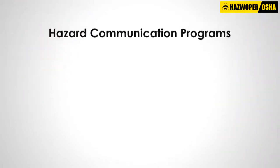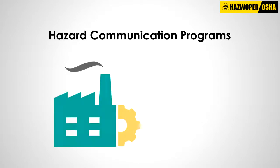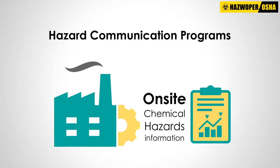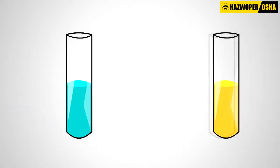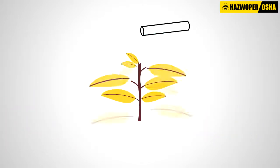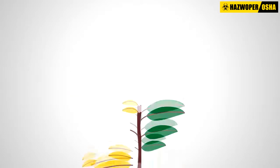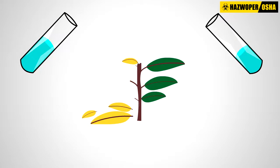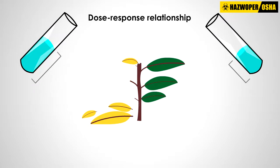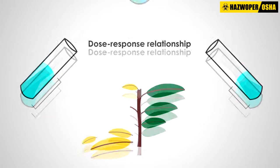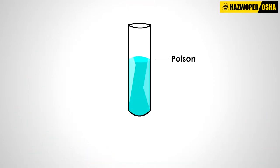Today, thanks to hazard communications programs, information about on-site chemical hazards can be found easily. Specific chemicals are responsible for the toxicity of a plant or animal poison. Studies have revealed that the body's response to these chemicals depends on the dosage received. This is called the dose-response relationship. According to the dose-response relationship, all substances are poisons and the right dose differentiates a poison and a remedy.